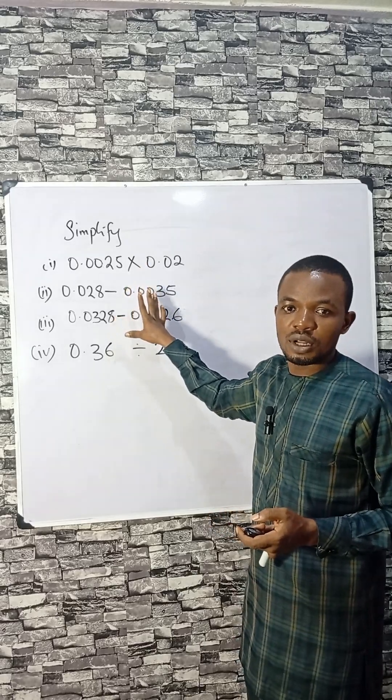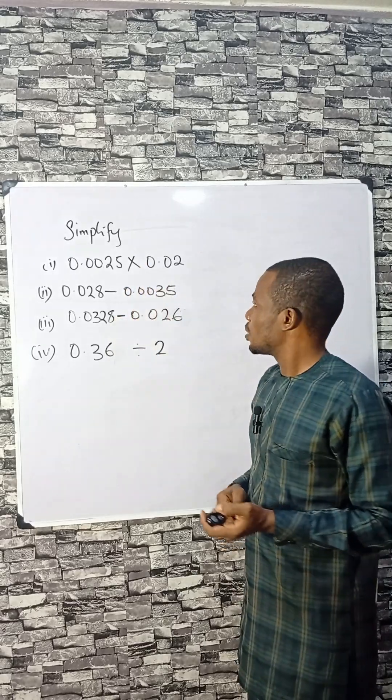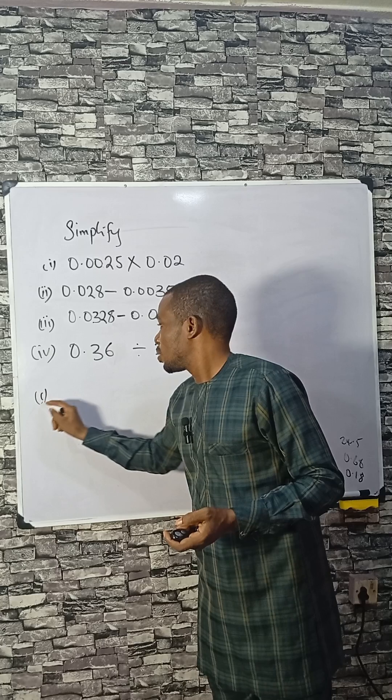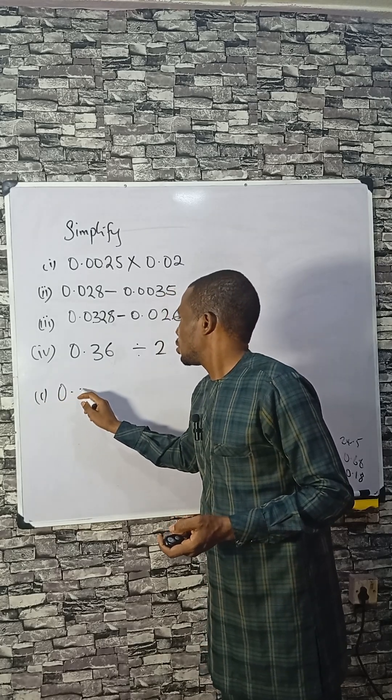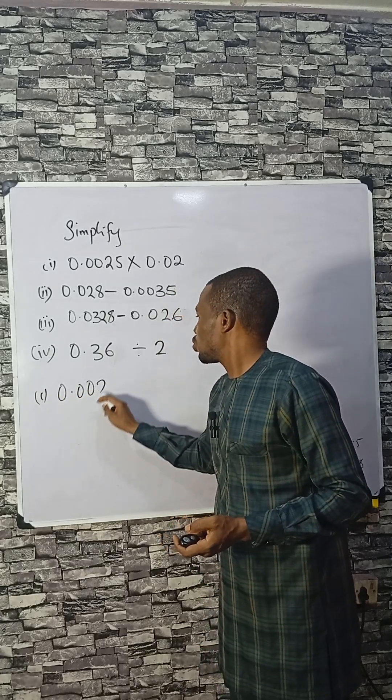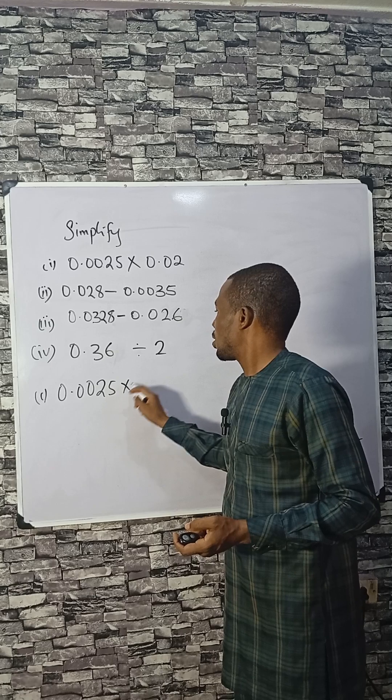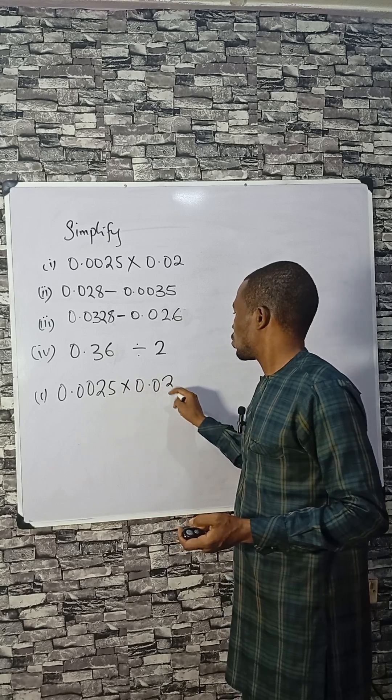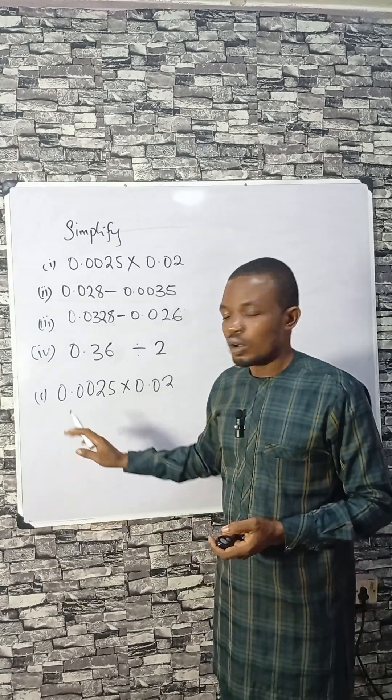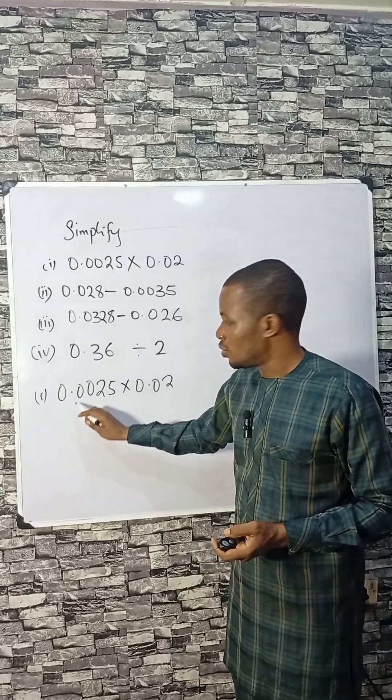How can you simplify the following without using a calculator? Let's see. 0.0025 multiplied by 0.02. What you need to do is convert this to standard form by moving the decimal place.